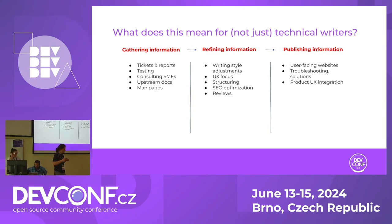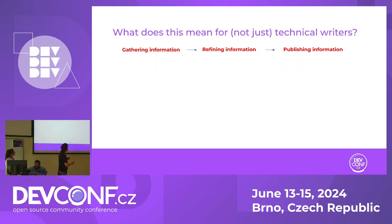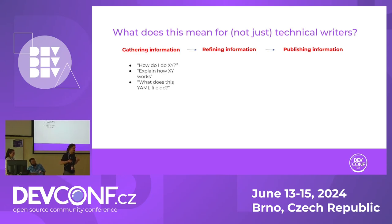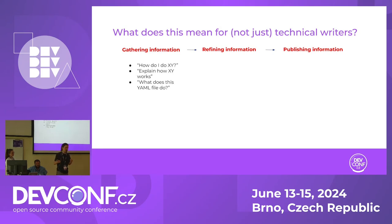Now, in theory, in each of these phases of technical writing, AI tools can be very resourceful collaborators. In the first phase, we as technical writers are basically just like anybody else asking an LLM for information. We can ask what something is, what it does, how it works, or what a particularly obtuse piece of code actually does — and an AI tool can be very helpful in all these requirements.